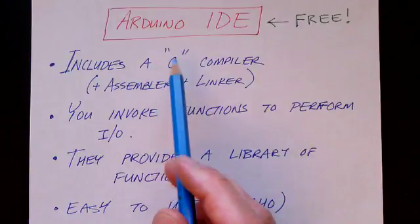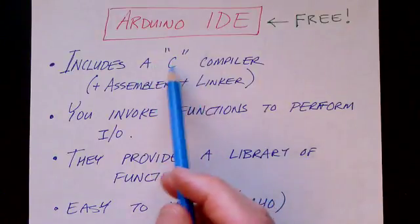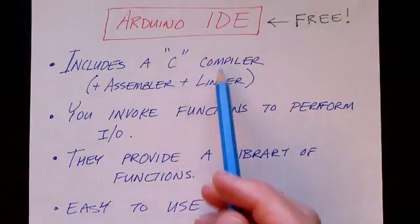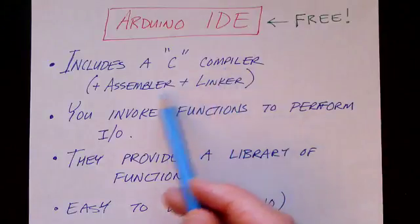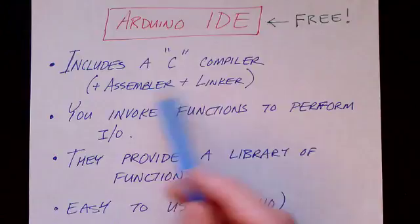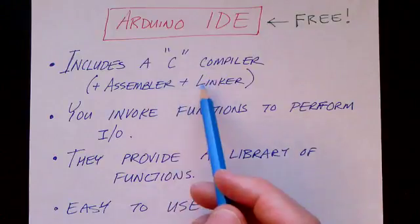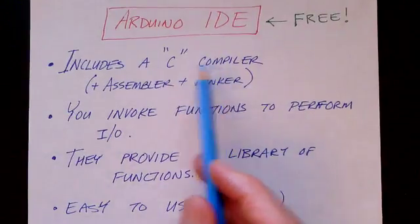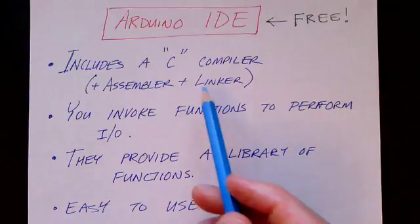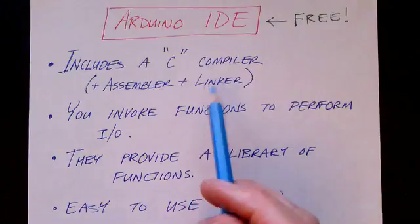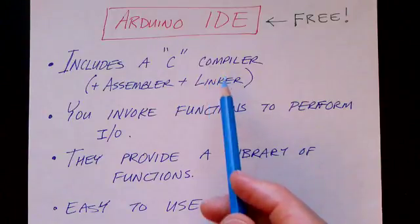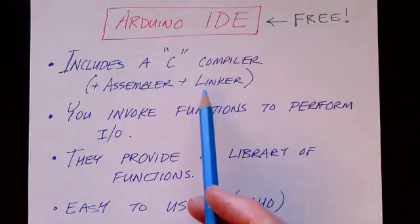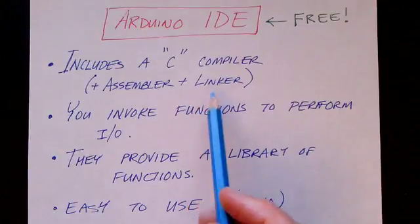This development environment includes a number of different things. It includes a C compiler, as well as the other parts of the assembly chain, the assembler and the linker. These are all hidden from you, so you basically just push a compile button and it's all done for you. You don't have to worry about the details of makefiles. It also includes an editor so you can type in your programs, and it's pretty straightforward.